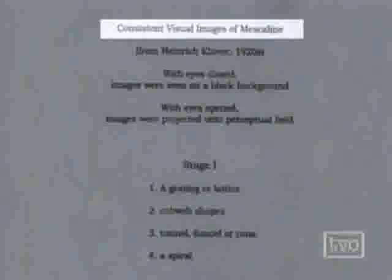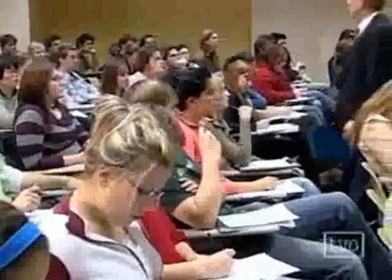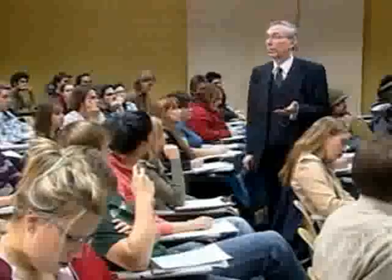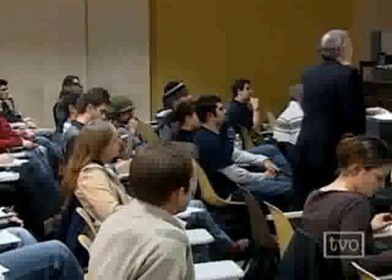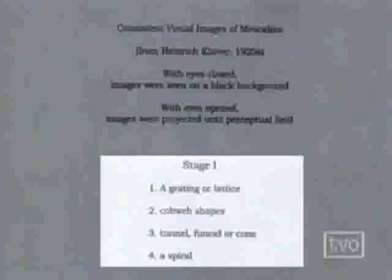Let's begin with some of these classic ones in terms of understanding the kinds of images. Let's take a look at the consistent images associated with mescaline, for example. Mescaline is actually a trimethoxyethylamide, which means it's basically a compound very similar to dopamine — the one involved with all kinds of addictions. In stage one of mescaline — so-called peyote — the typical experience is a grating or lattice, cobweb shapes, a tunnel or funnel or cone, and a spiral.